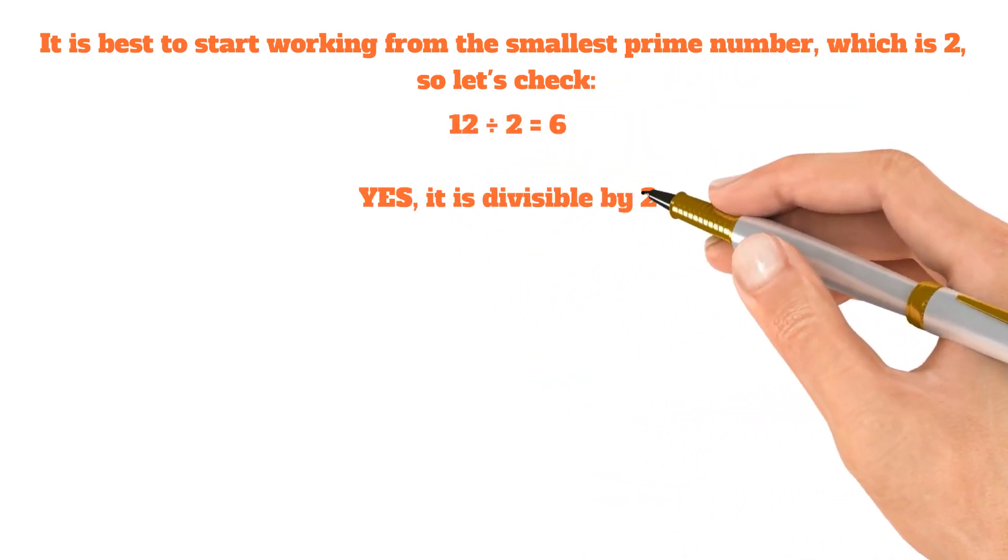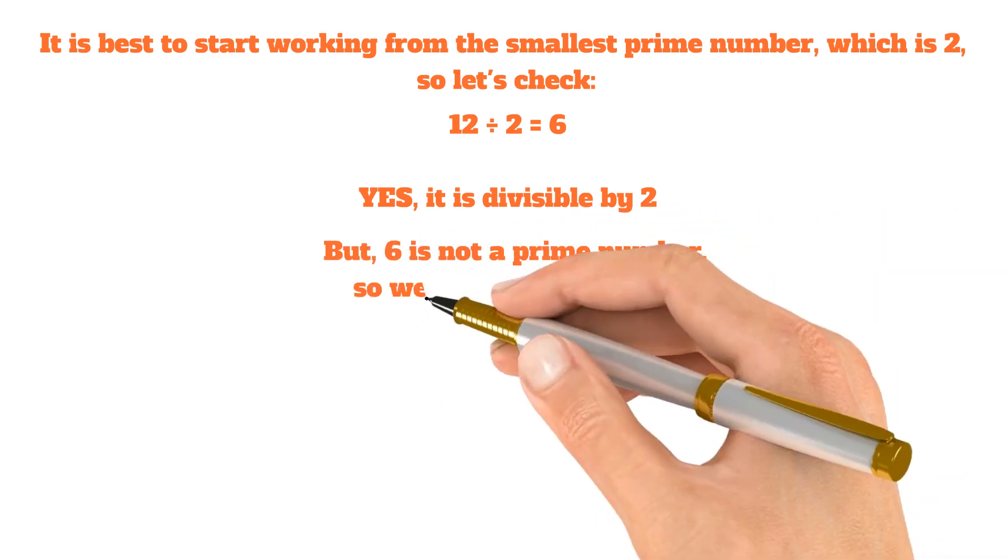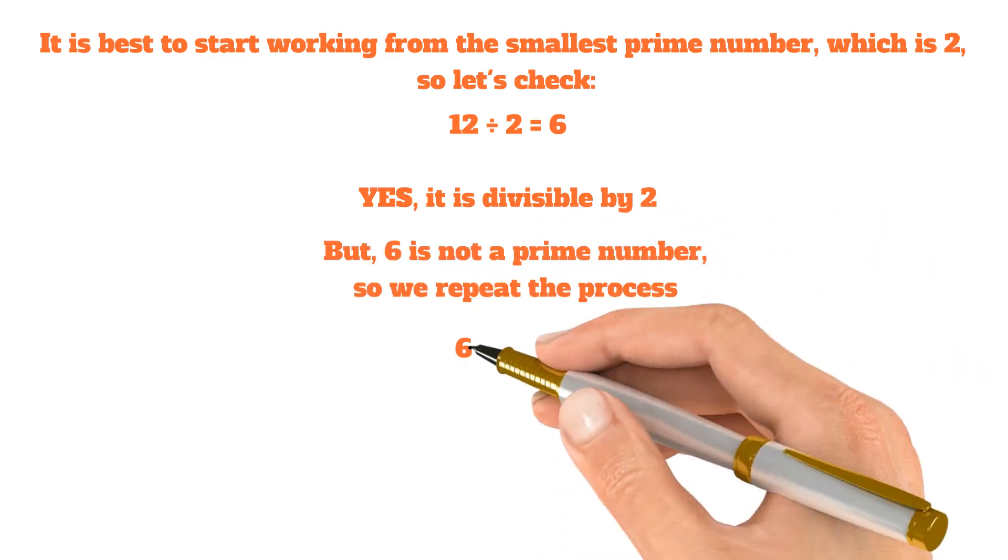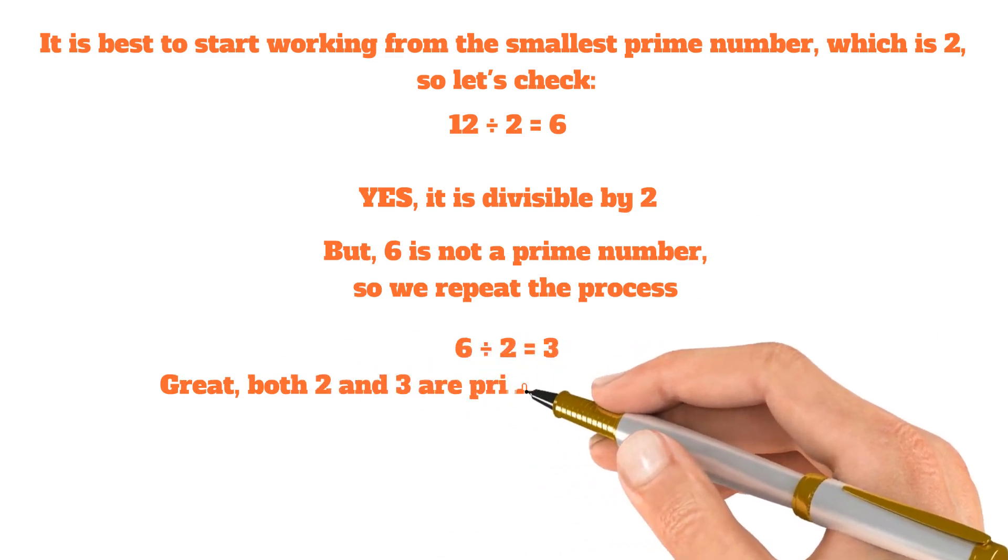it's divisible by 2. But 6 is not a prime number, so we repeat the process. 6 divided by 2 equals 3. Great, both 2 and 3 are prime numbers. We are done.